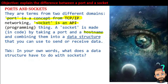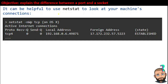A socket is made in code by taking a port and a host name — the IP address — and combining them into a data structure. A socket is a data structure, just like an array is a data structure. Now that we have this socket data structure, we can send and receive data. If you do something as simple as type netstat on your own computer, you can see some of your machine's connections.